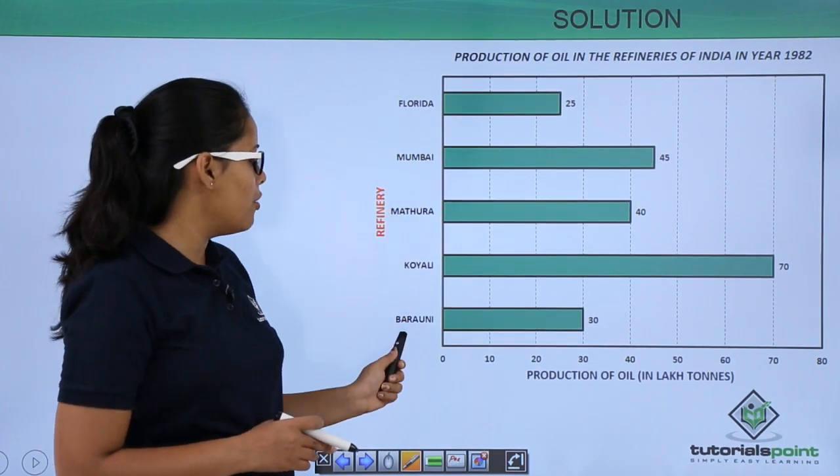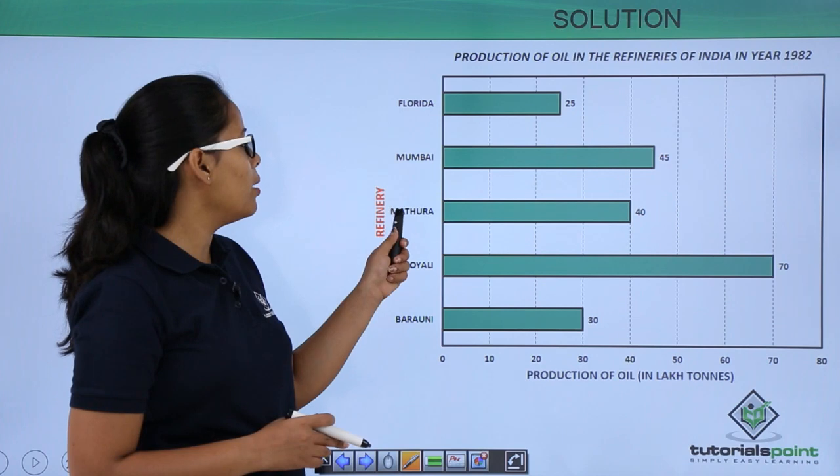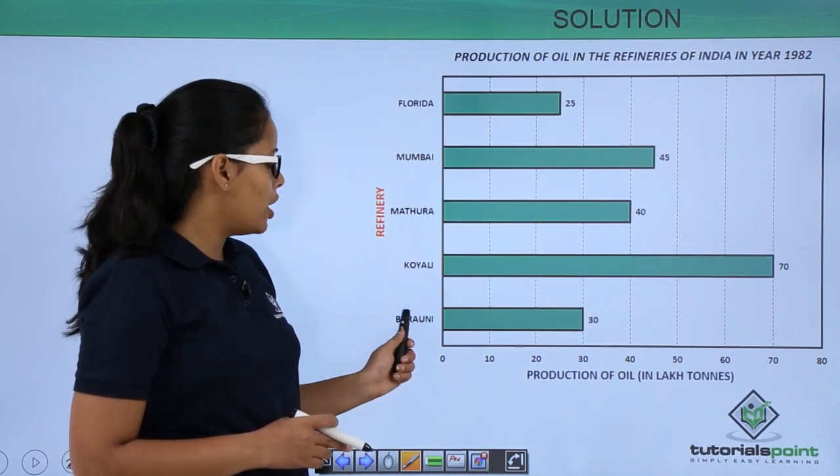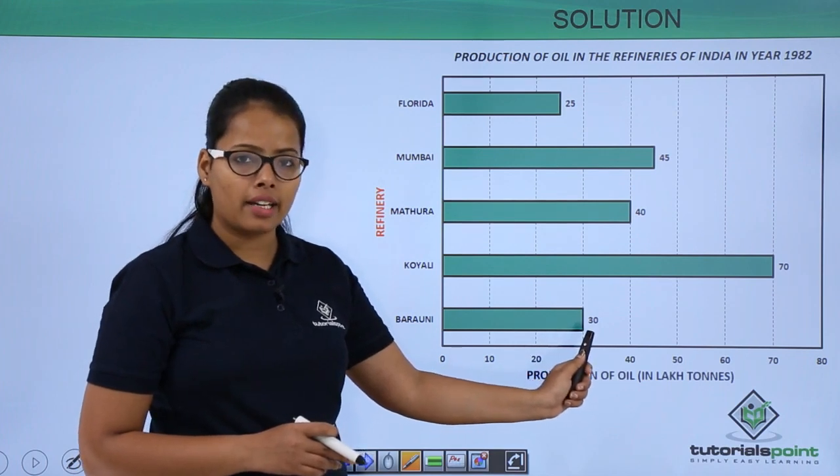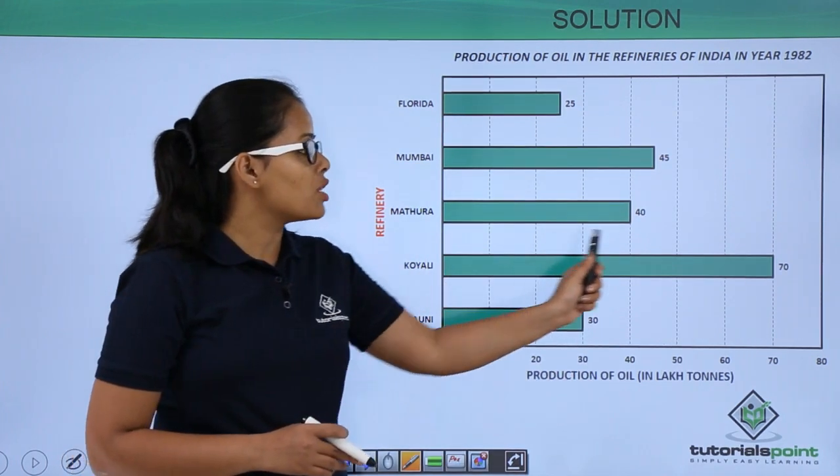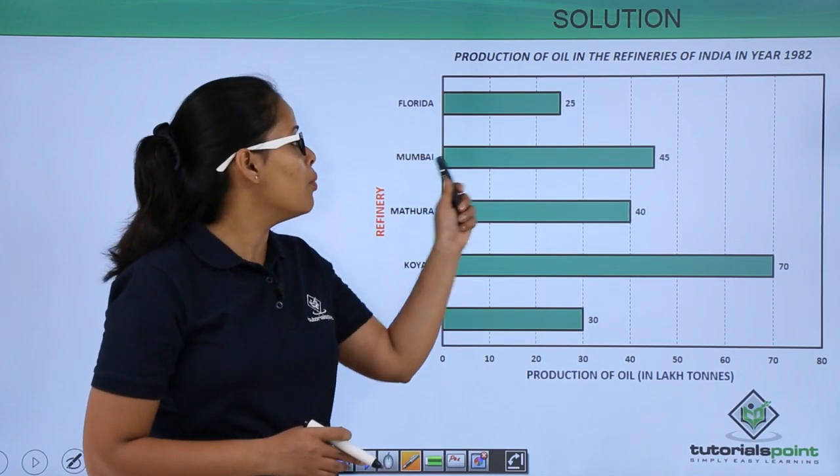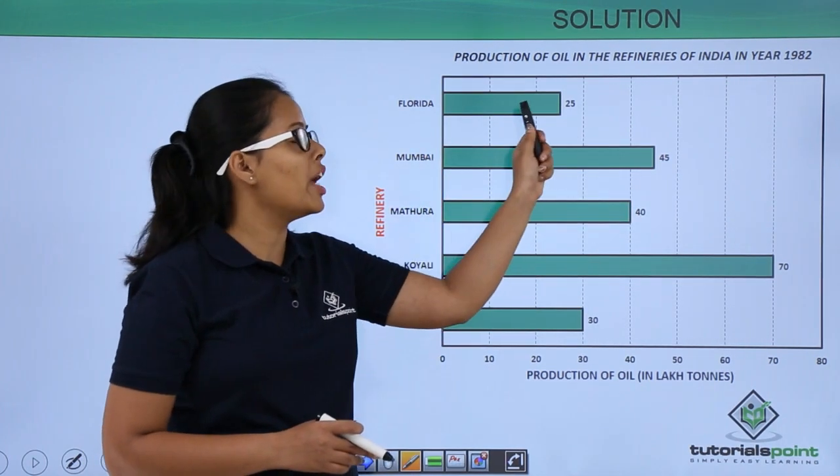So these are the refineries in India which is Baruni, Kohli, Mathura, Mumbai, and Florida. Oil production in Baruni was 30 lakh tons. In Kohli it was 70 lakh tons. In Mathura it was 40, in Mumbai it was 45, in Florida it was 25.